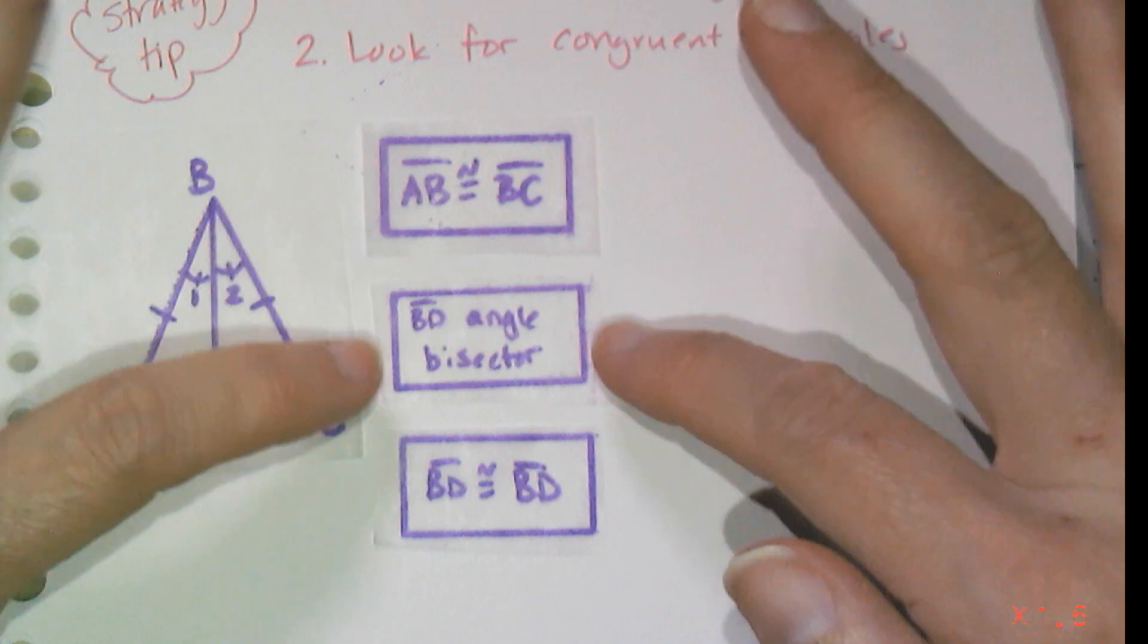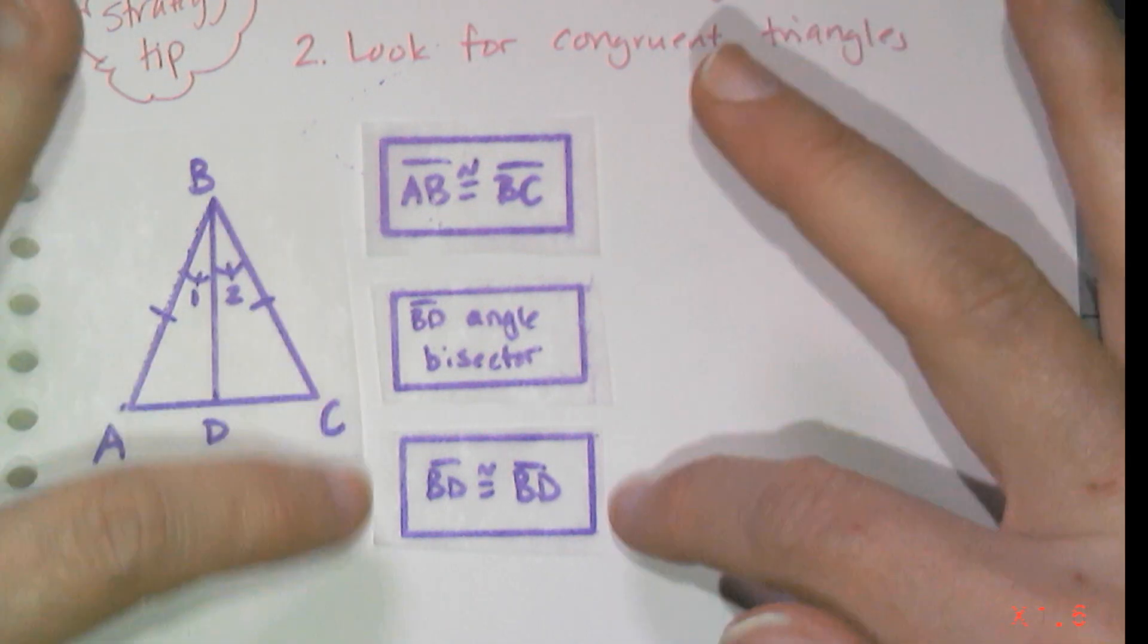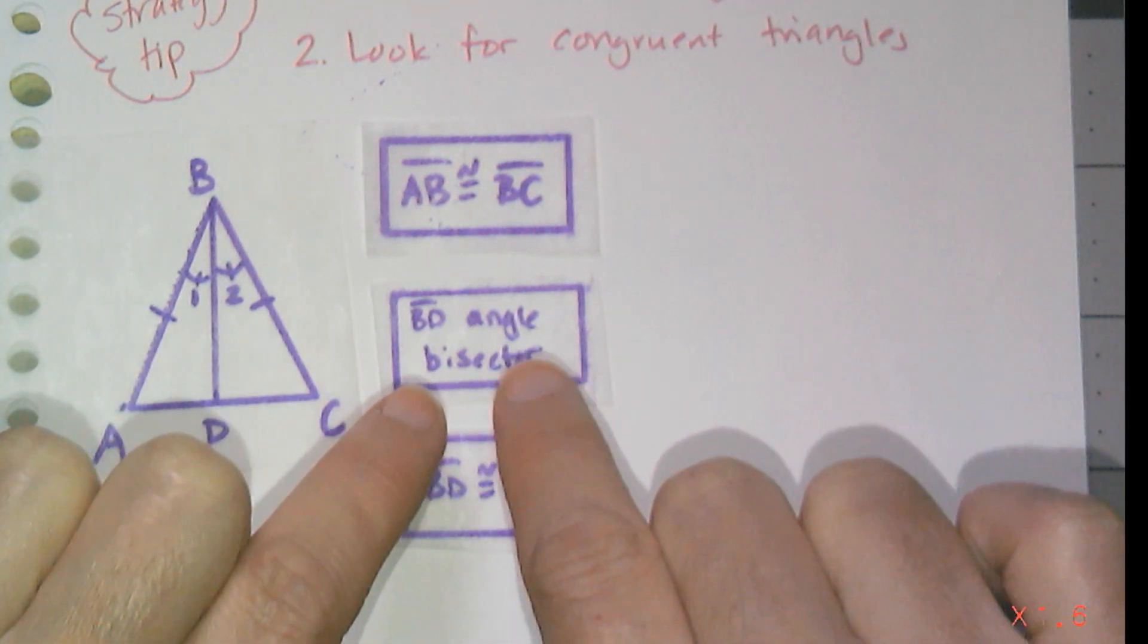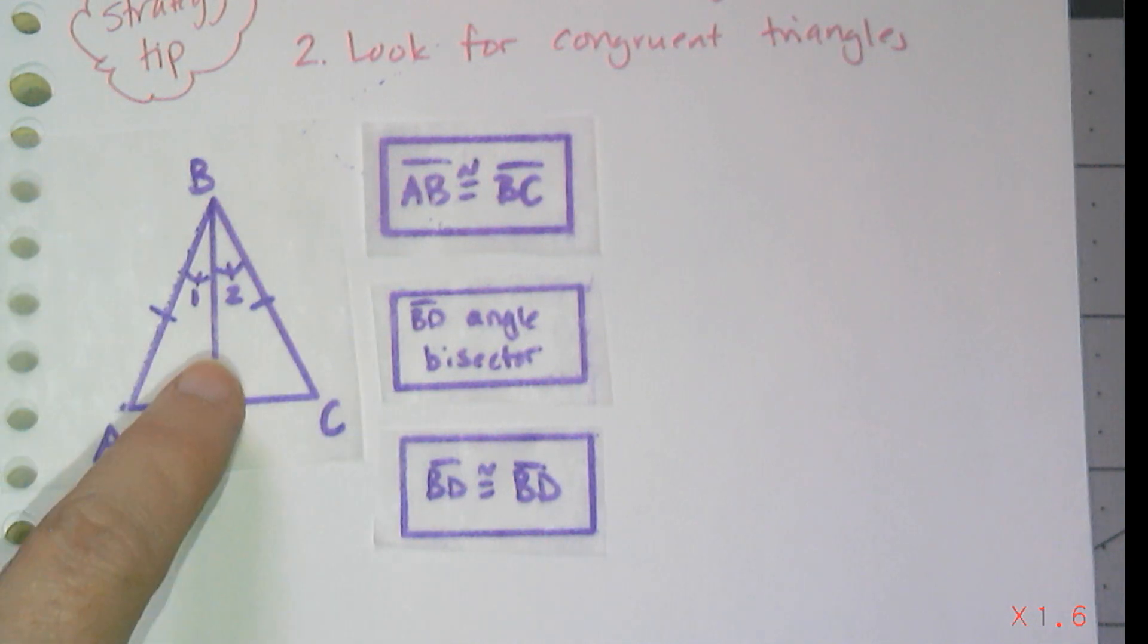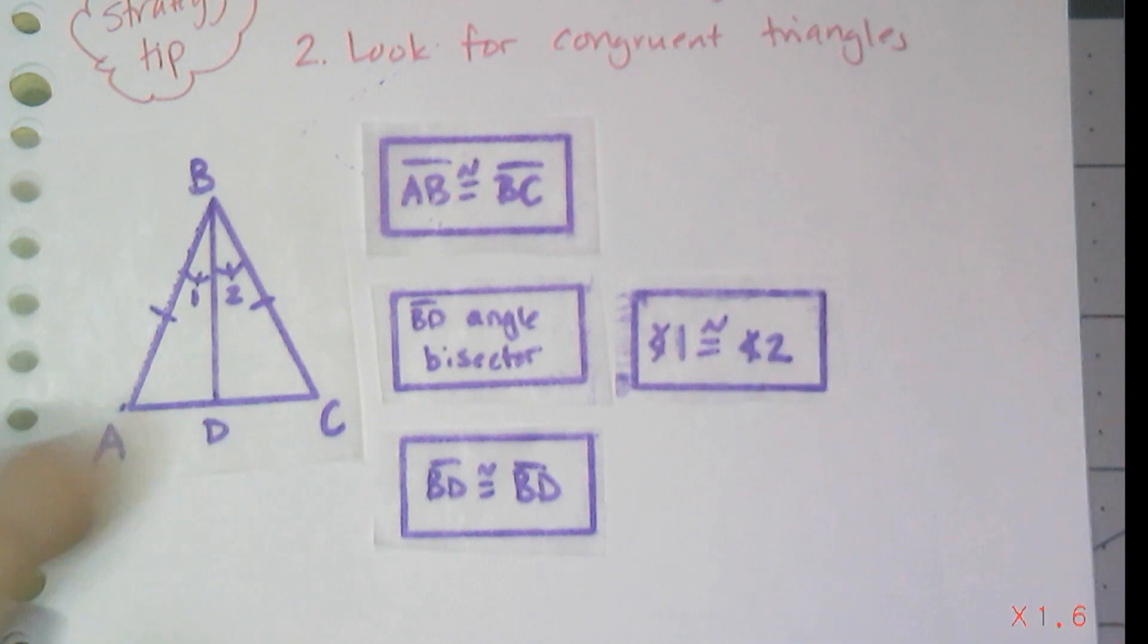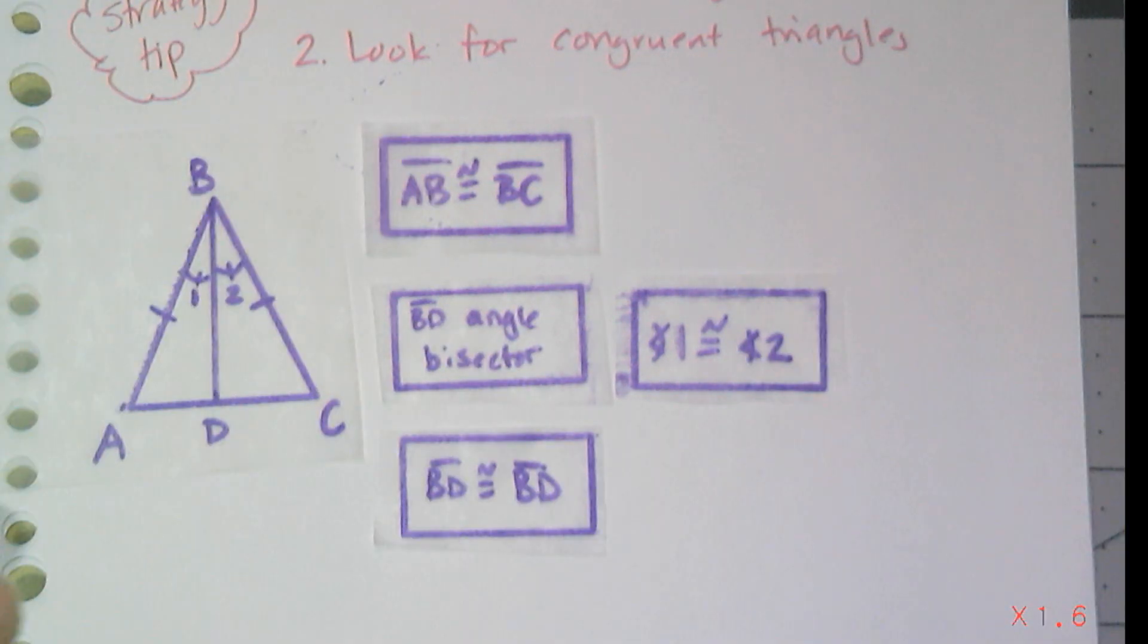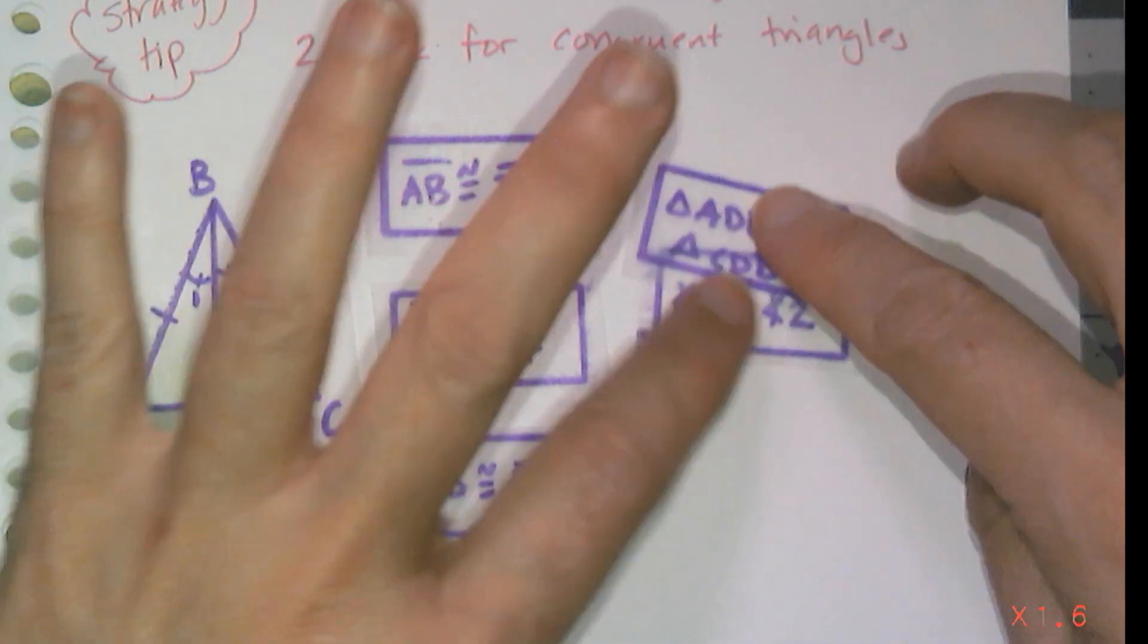Well, these three pieces give me a side, almost an angle, and a side. I don't quite have an angle yet here because I can make a conclusion from this. Right. If BD is the angle bisector, then I know by definition of angle bisector that angle one is congruent to angle two. And so now I have a side, an angle, and a side. And I can say that triangle ADB is congruent to triangle CDB. Gotta flow.